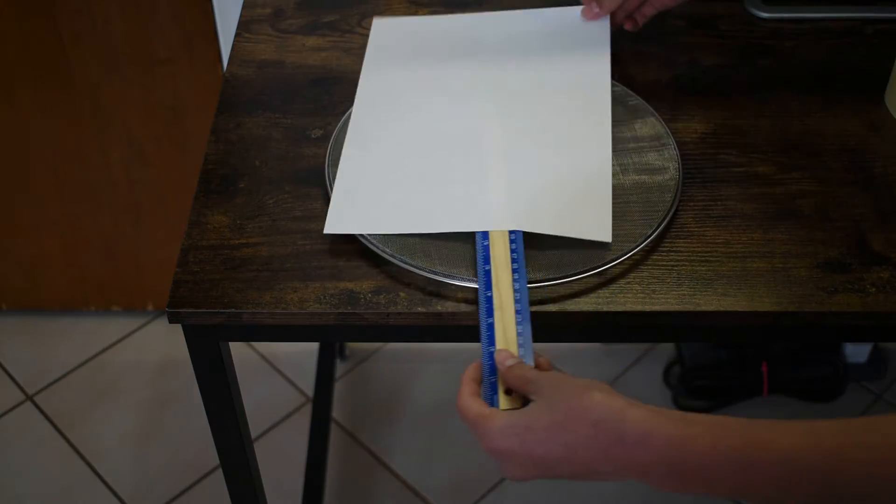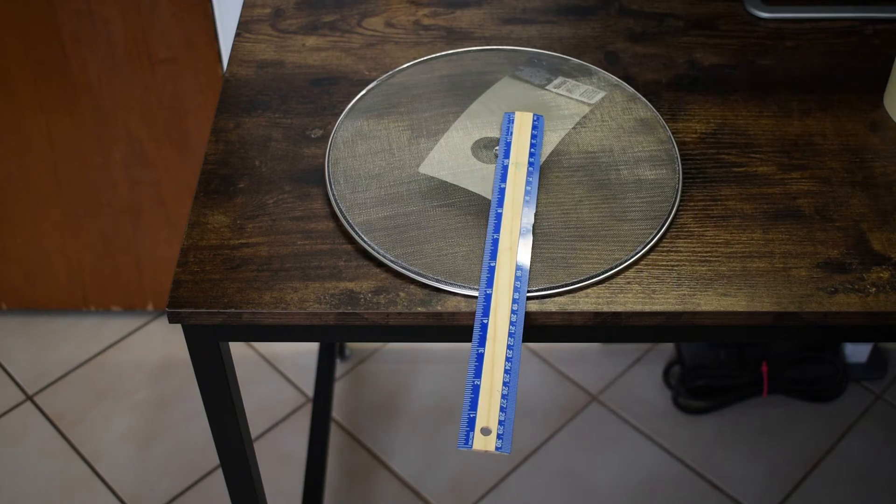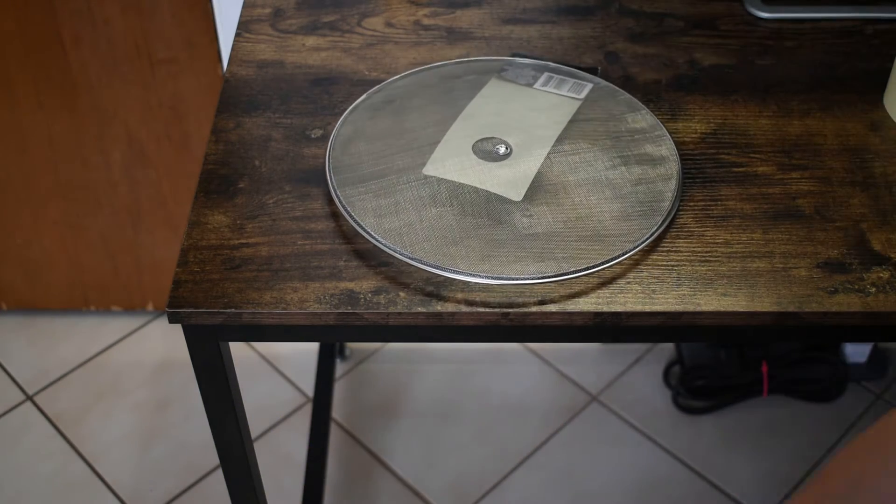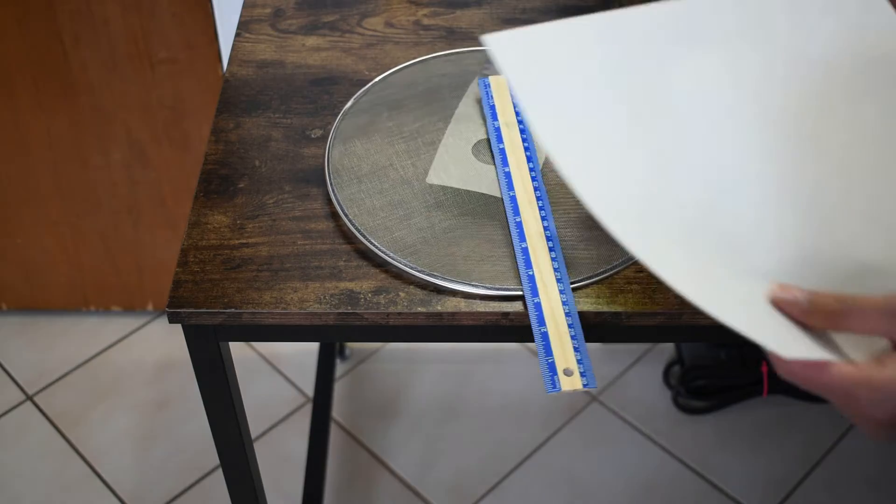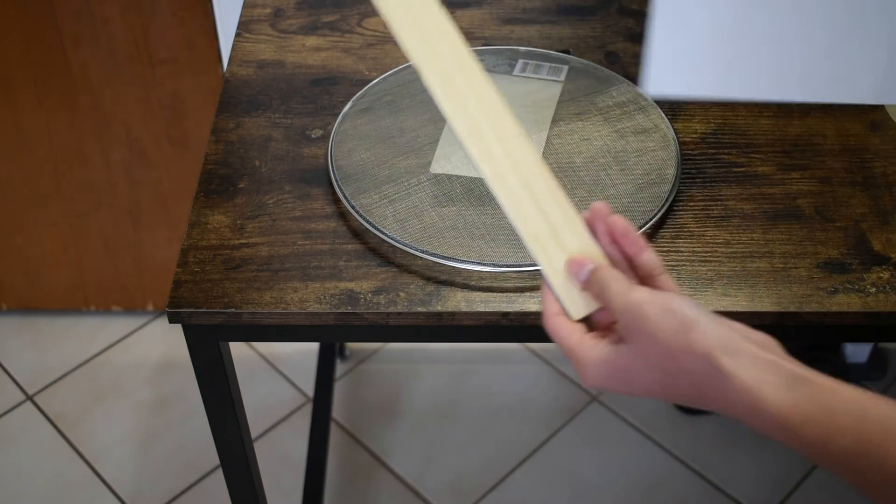So now let's try our same experiment again but on this perforated strainer here. So I'm gonna do it without the paper first, and as expected it flies right off. But now I'm gonna add the paper on here and let's see what happens. Still flies off.